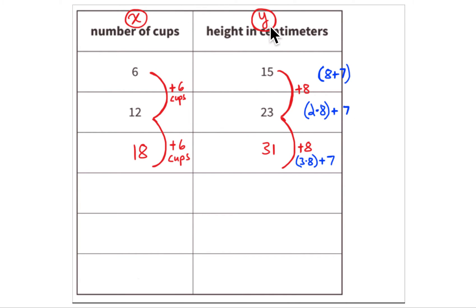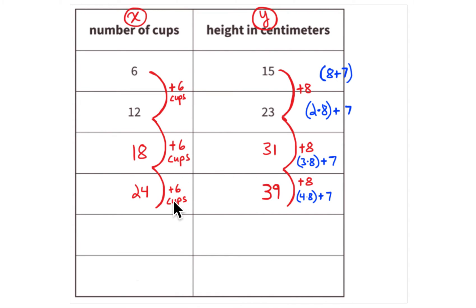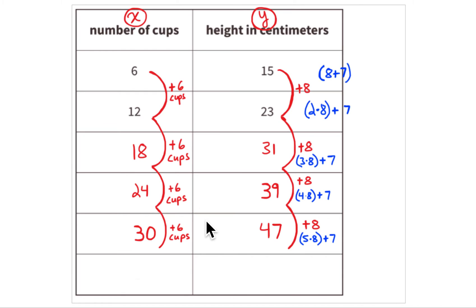Here's the x-value and y-value. Six more cups to 18 cups: three times eight is 24 plus seven equals 31 centimeters. Four times six is 24 cups: four times eight is 32 plus seven equals 39 centimeters. Five groups of six is 30 cups: five times eight is 40 plus seven equals 47 centimeters. Now it gets tricky because we want to reach 50 centimeters.